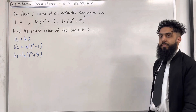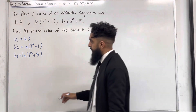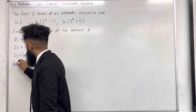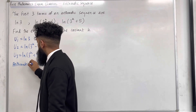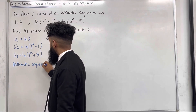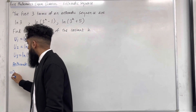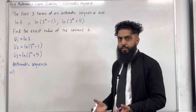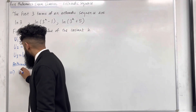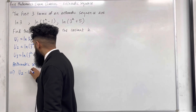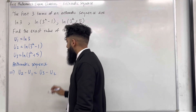Now we have an Arithmetic Sequence, so this implies that there is a common difference. If there's a common difference, u2 minus u1 has to equal u3 minus u2.